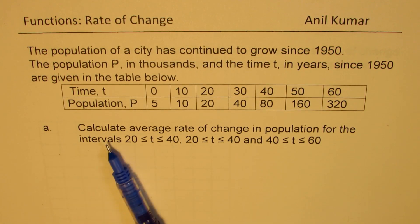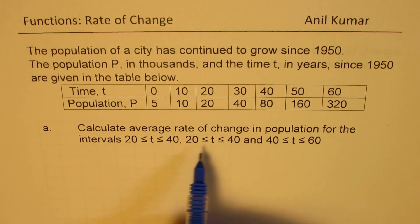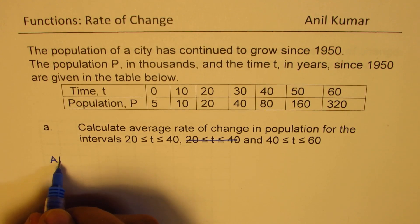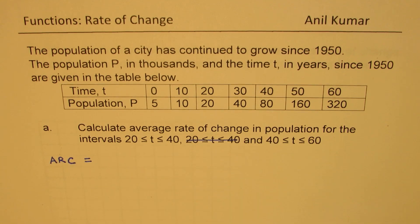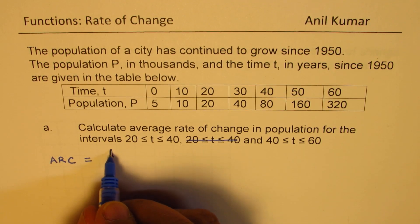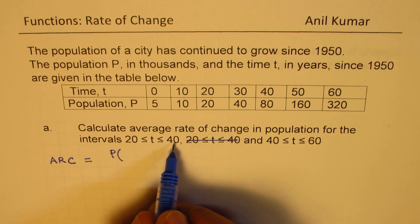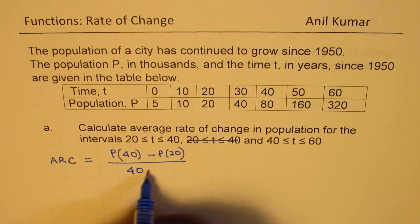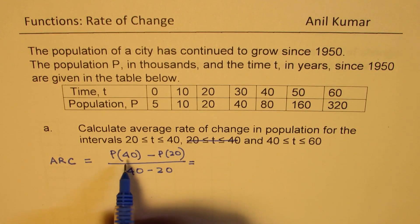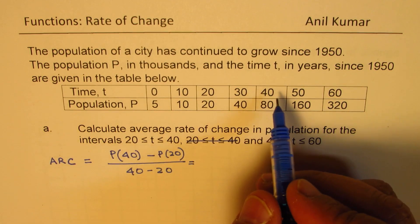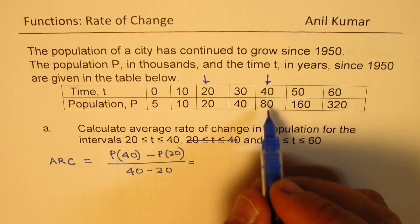We will do Part A, which is calculate average rate of change in the population for the intervals 20 to 40 and 40 to 60. To find average rate of change between any two points, we write the value at those points. So population is a function of time: population from 20 to 40 is P(40) minus P(20) divided by 40 minus 20.